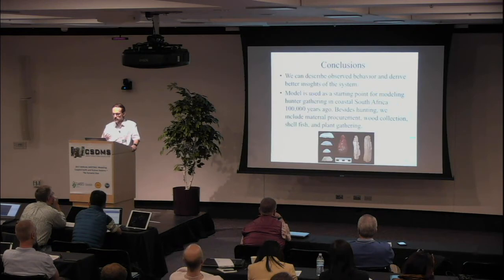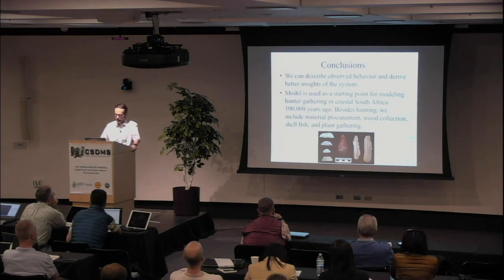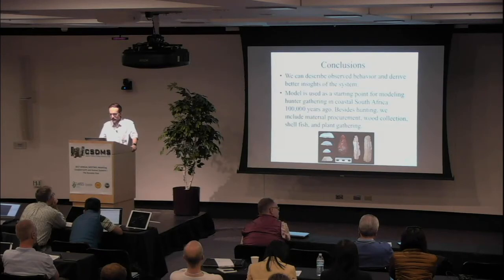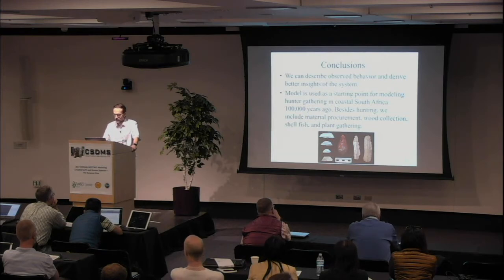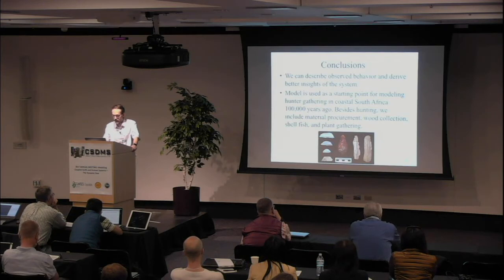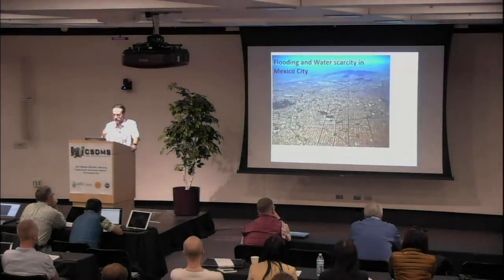I had to force the process by providing a very simple initial version of the model so that my colleague could better express what needed to be included. We used the model to look at optimal group size, and the optimal group size was famously in line with what was observed. One reason we do this kind of hunter-gatherer modeling is that we are now developing a model in South Africa about 100,000 years ago, where we don't have direct observations, but we can test different ways our ancestors moved and interacted with the landscape.